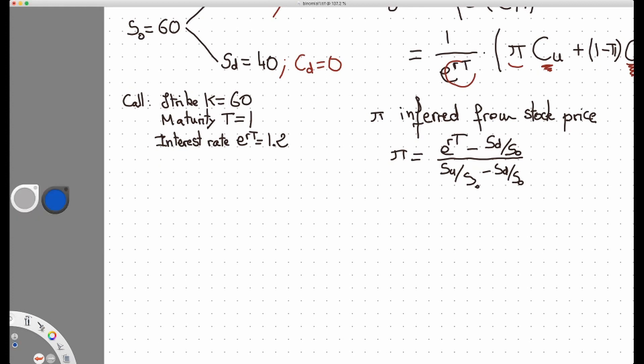Okay, so here I actually can solve directly for the probability of going up. It's equal to what? Exponential r cap t, we know it's 1.2, minus Sd over S0. Sd is equal to 40, S0 is equal to 60, so that's minus 40 over 60.